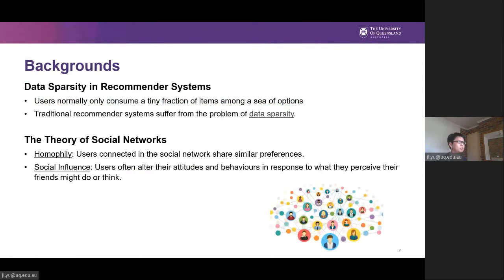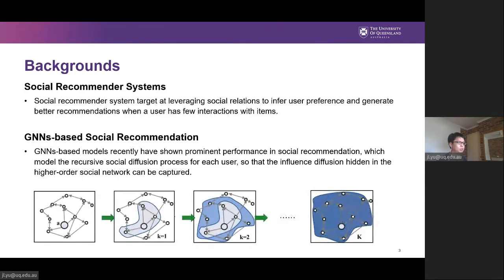As you know, recommender systems often suffer from data sparsity issues since users only consume a tiny fraction of items. Social relations as a type of side information, which can be readily collected, often act as an antidote to data sparsity issues. According to the theory of homophily and social influence, we know that users connected in the social network often share similar preferences. Upon these social theories, social recommender systems are defined.